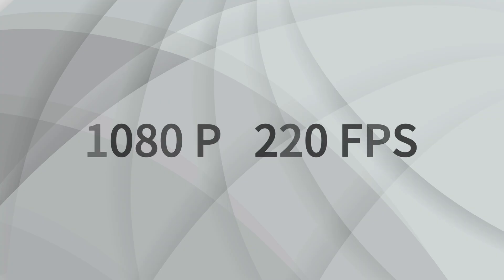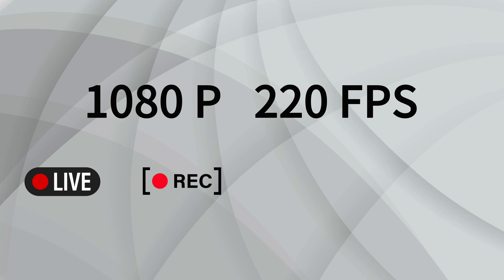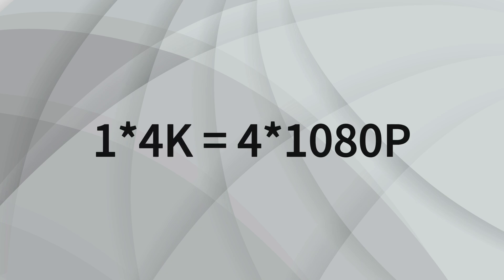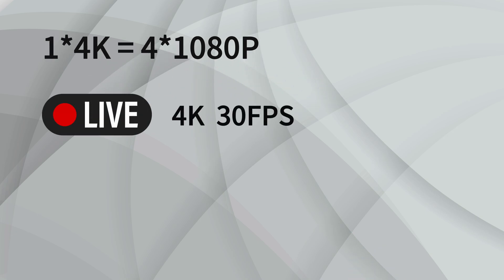Here's something important to note. The Ultra's ISO recording also has performance limitations. The Ultra's encoding performance maxes out at 1080p, 220fps. Streaming, recording, replay, and NDI output all consume encoding performance. One 4K stream is equivalent to four times the encoding load of 1080p. So if you're live streaming in 4K at 30fps, it's essentially like streaming at 1080p 120fps in terms of the system's encoding load.